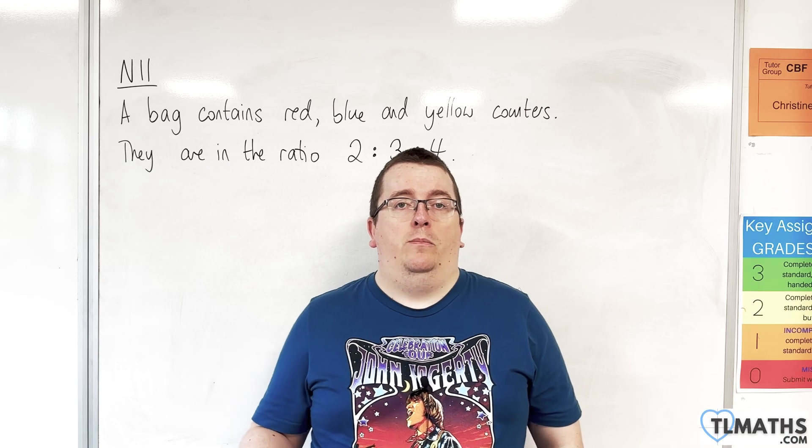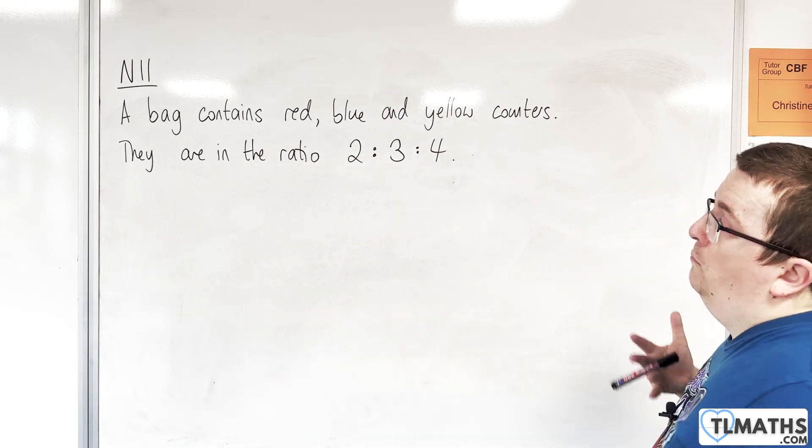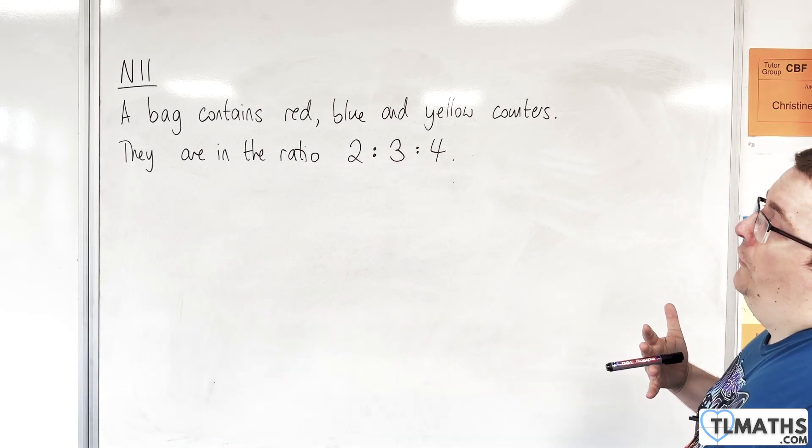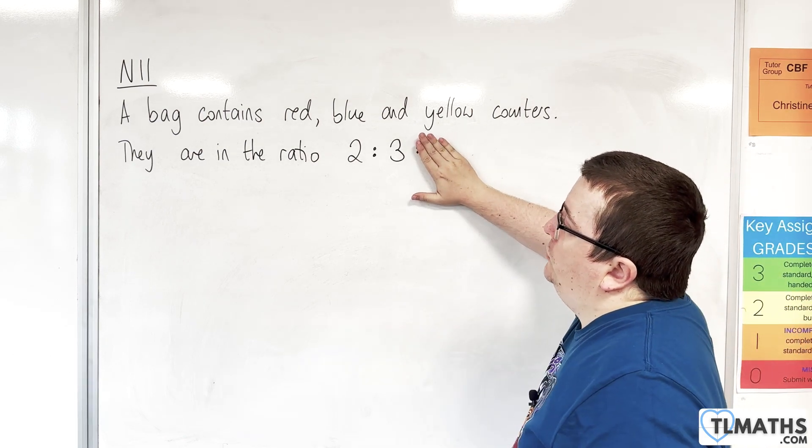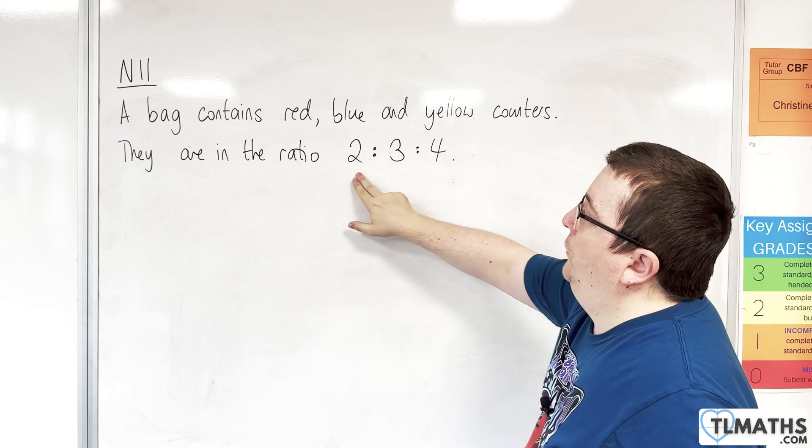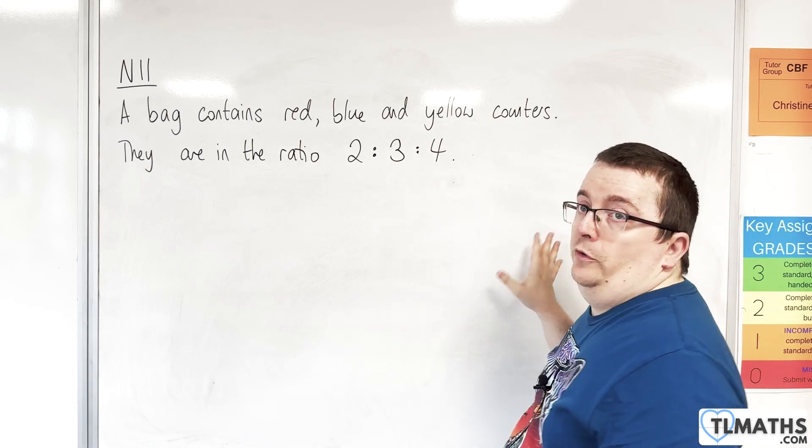When we're dealing with ratio problems, there's nothing stopping us from extending it to three or more items. Where we've been used to just dealing with the ratio 2:3, we could have 2:3:4, or you could have another one saying 2:3:4:5.